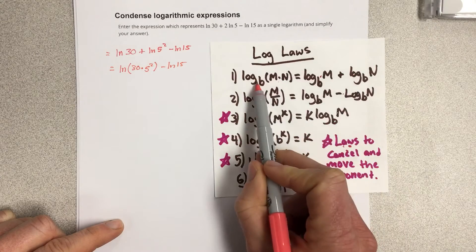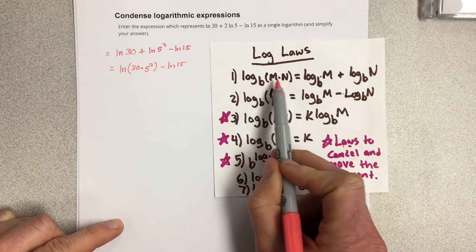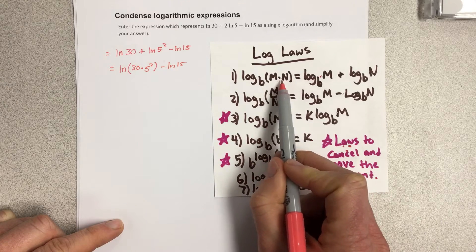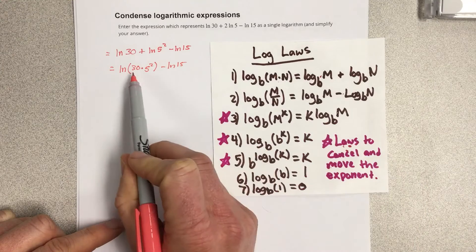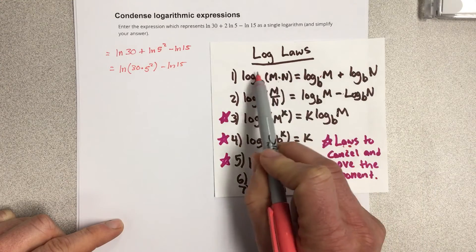Product rule is right here, log base b of m times n equals log base b of m plus log base b of n. So we took this piece and condensed it to this.